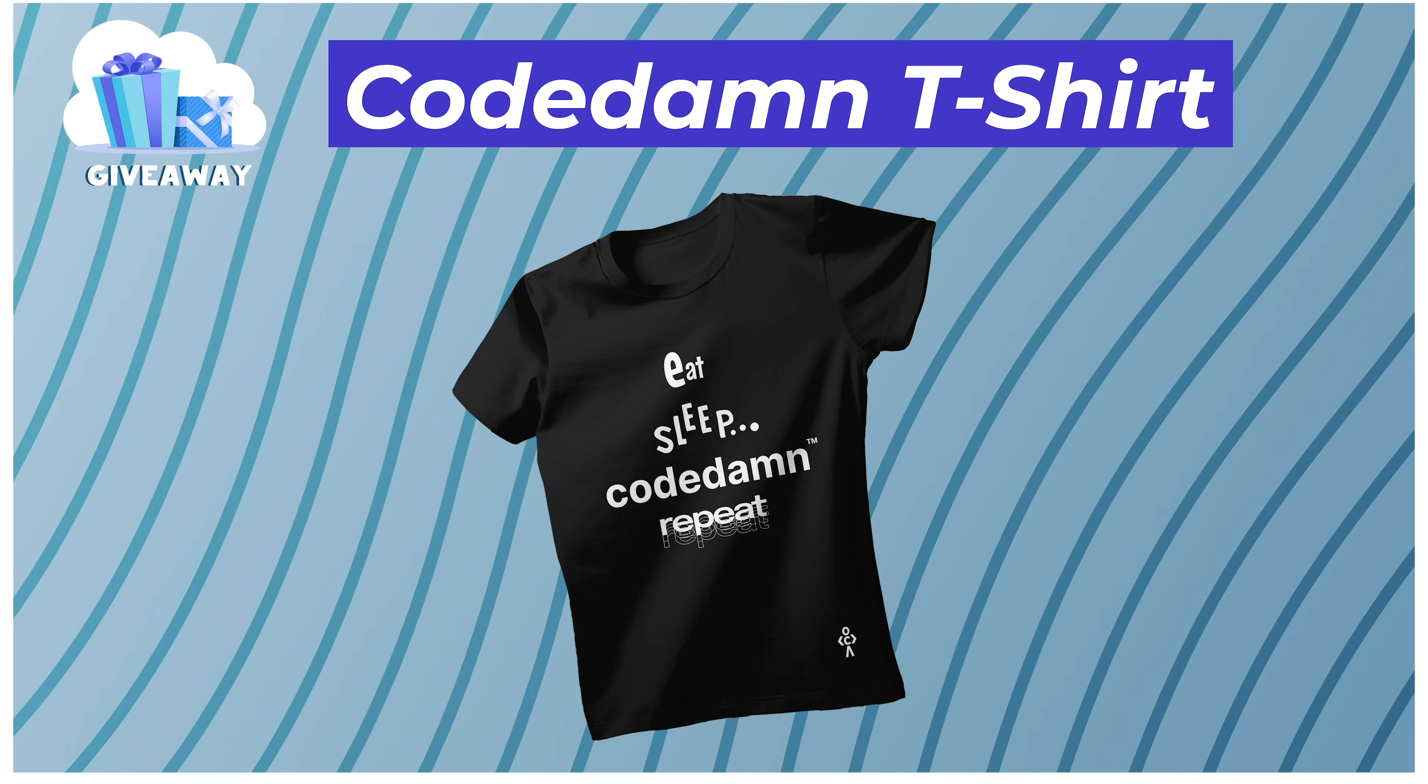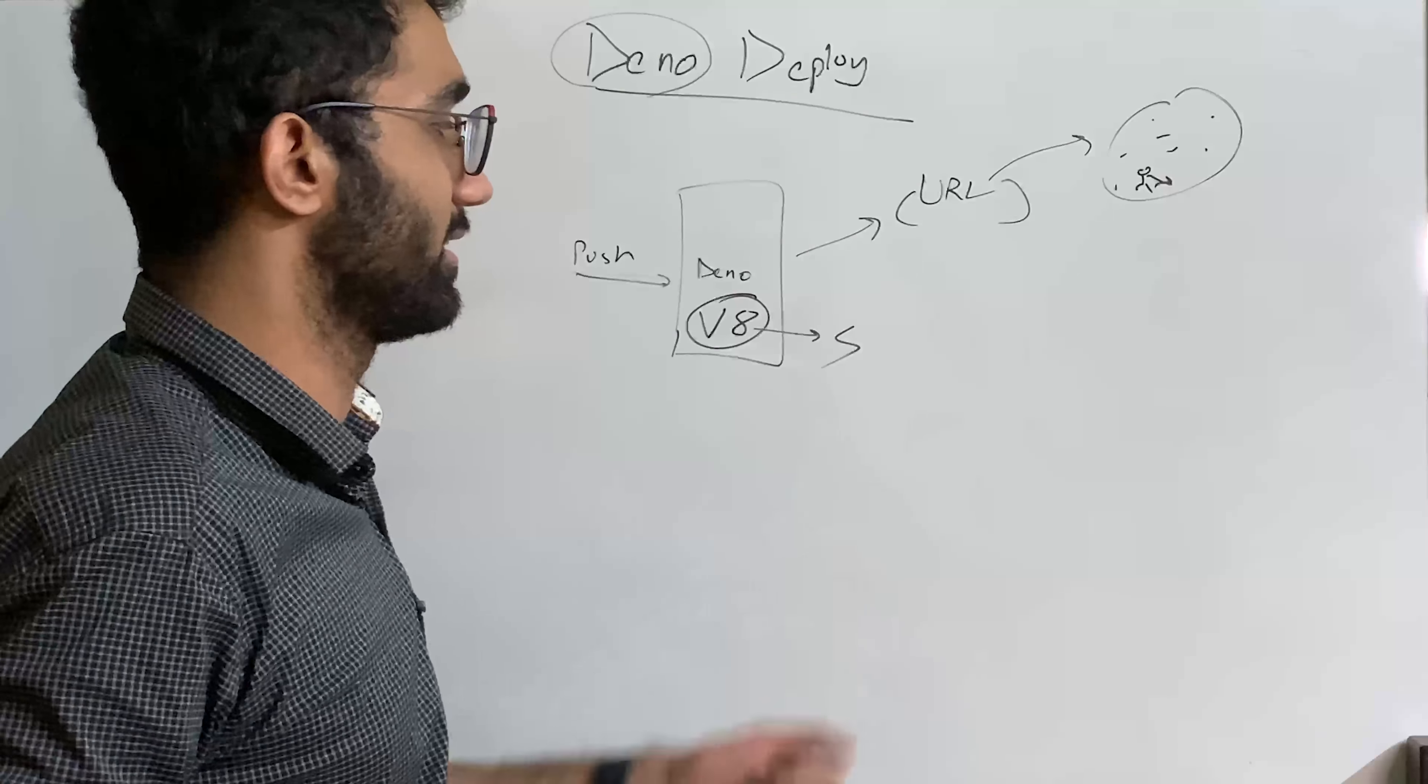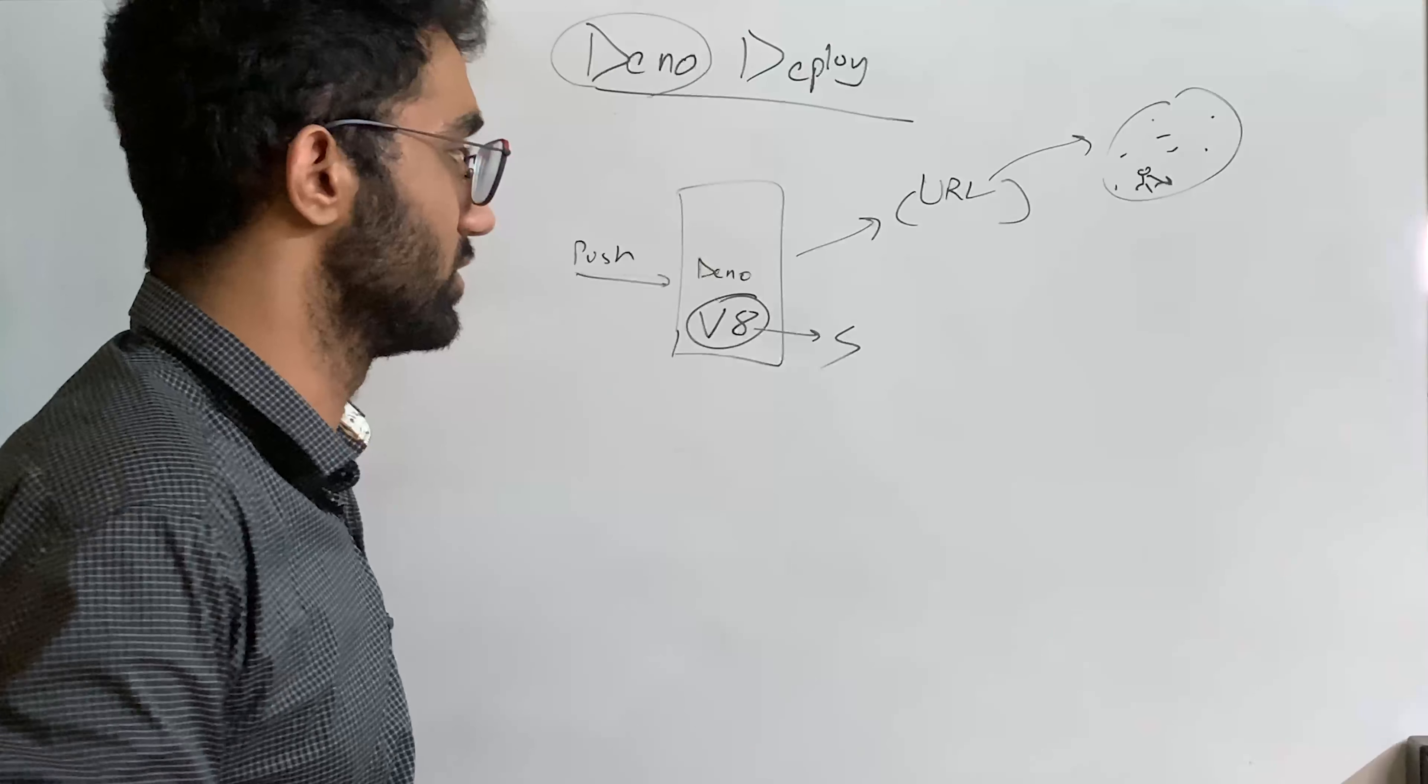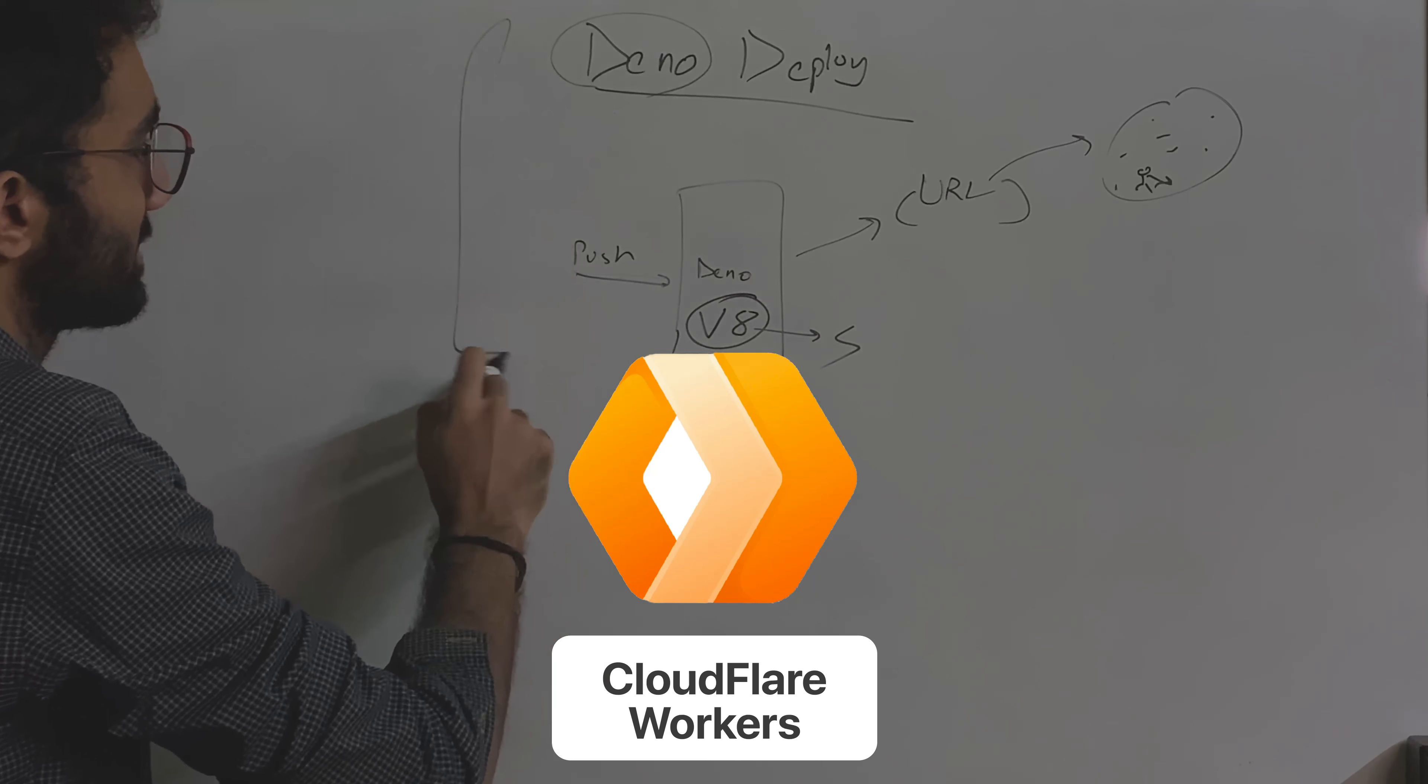So what it does is pretty much just like Cloudflare, it gives you the ability to push your code to Deno and then it spits out a URL which is deployed globally, pretty much on all the service centers or whatever they have. And then pretty much any user who accesses it gets the nearest code executed.